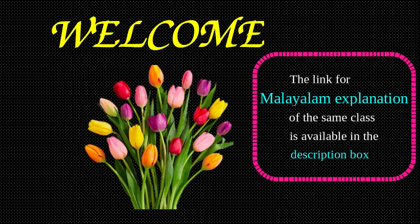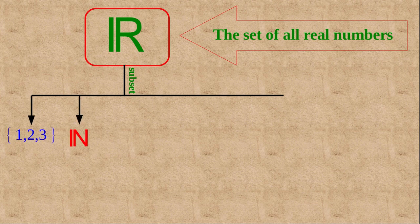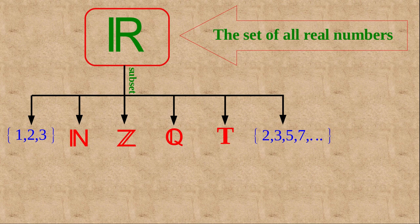Good morning all, welcome to a new session on the chapter Sets. In the previous class we discussed subsets, power set, proper subsets, universal set, etc. Today we are going to learn special types of subsets of the set of all real numbers. You can write many subsets like {1,2,3}, N, Q, Z, and {2,3,5,7} etc. All natural numbers, integers, rational numbers, irrational numbers, and prime numbers are real numbers, so these are all subsets of the set of all real numbers.